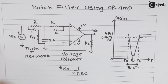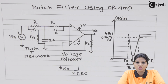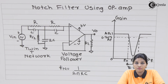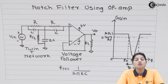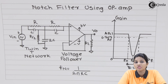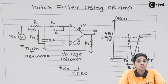The bandwidth is FL minus FH. As the frequency response gets more and more sharper, the bandwidth is reduced and therefore we can select a particular frequency to be rejected by the filter. When we connect op-amp to the twin T network, the notch-out frequency value remains the same: 1 divided by 2πRC. Notch filters are used in applications such as biomedical instruments and communication networks, where a very sharp frequency response is required to reject one particular frequency.